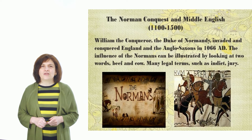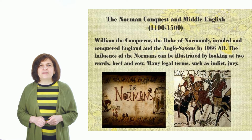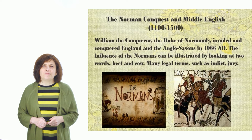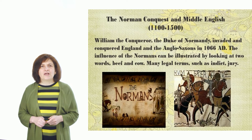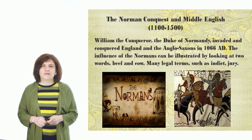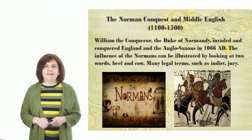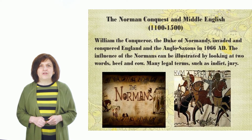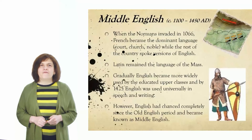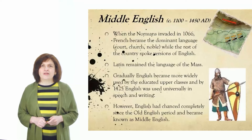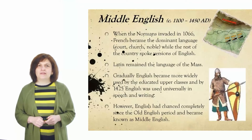A well-known example of such differentiation is presented by the names of animals which were of Anglo-Saxon origin and the name of the meat of these animals which was French, such as ox and beef, calf and veal, sheep and mutton. Enriched by French and Latin borrowings, the language still remained basically Anglo-Saxon. Finally, it became the national language, now we call it Middle English.